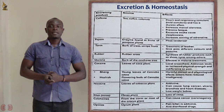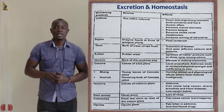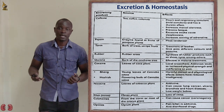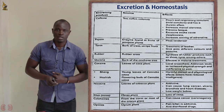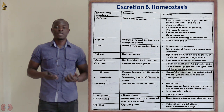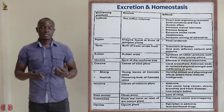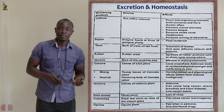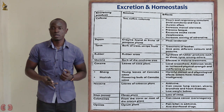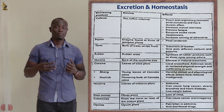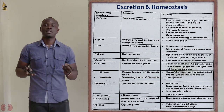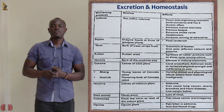Now let's look at plant excretory products — the different products excreted by plants. First, we have caffeine, which is mainly obtained from the coffee plant, tea plant, and the guarana plant.